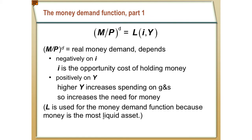This leads us to a more sophisticated version of money demand. The demand for real money balances — M divided by P — is a function L of two variables: the nominal interest rate and income. L comes from the term liquidity, since money is liquid. This is a general functional form, so when solving problems you'll be given an explicit function that relates the nominal interest rate and income to money demand.